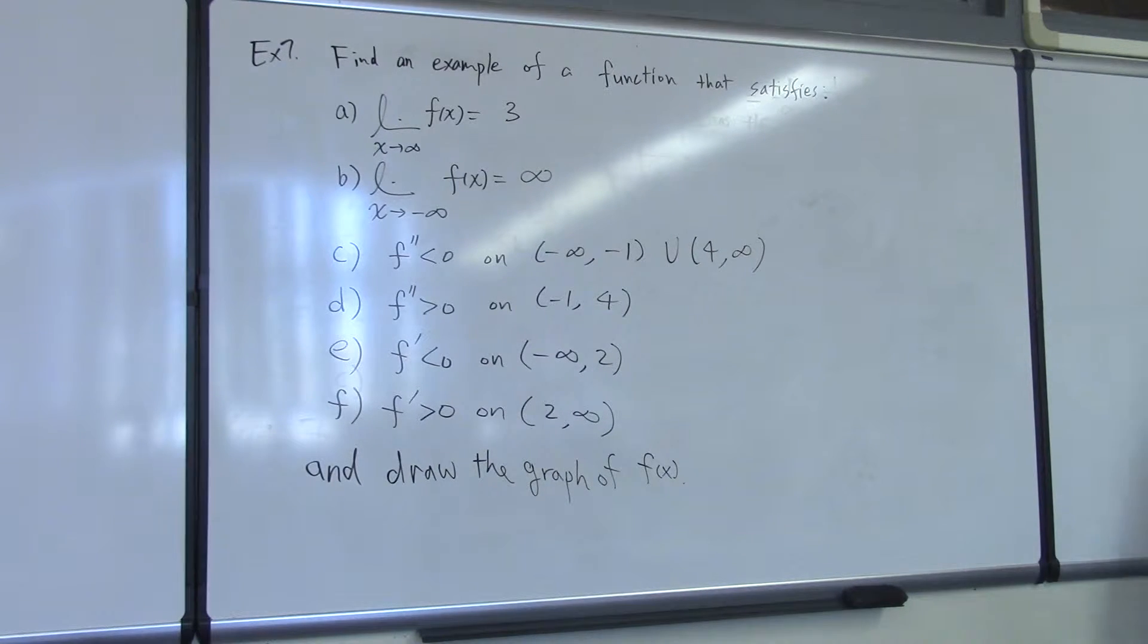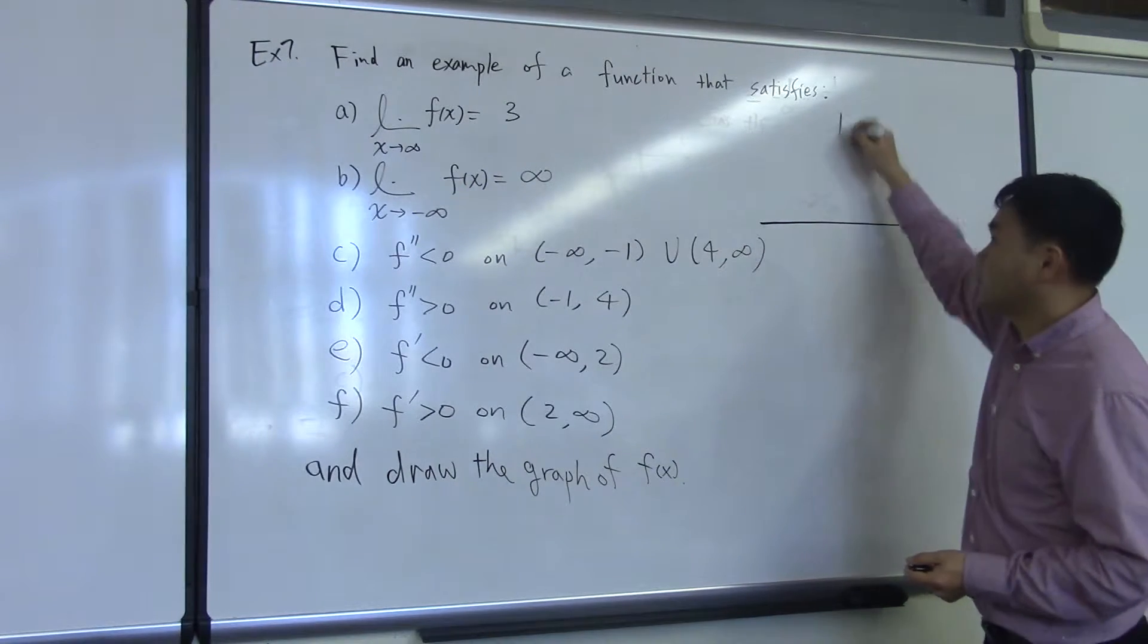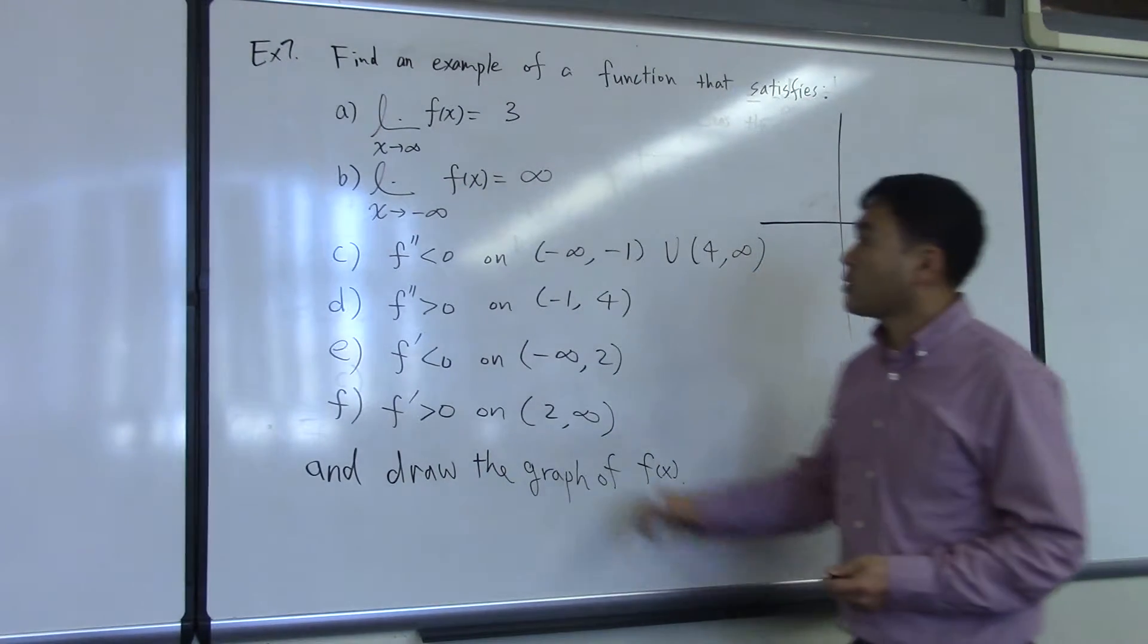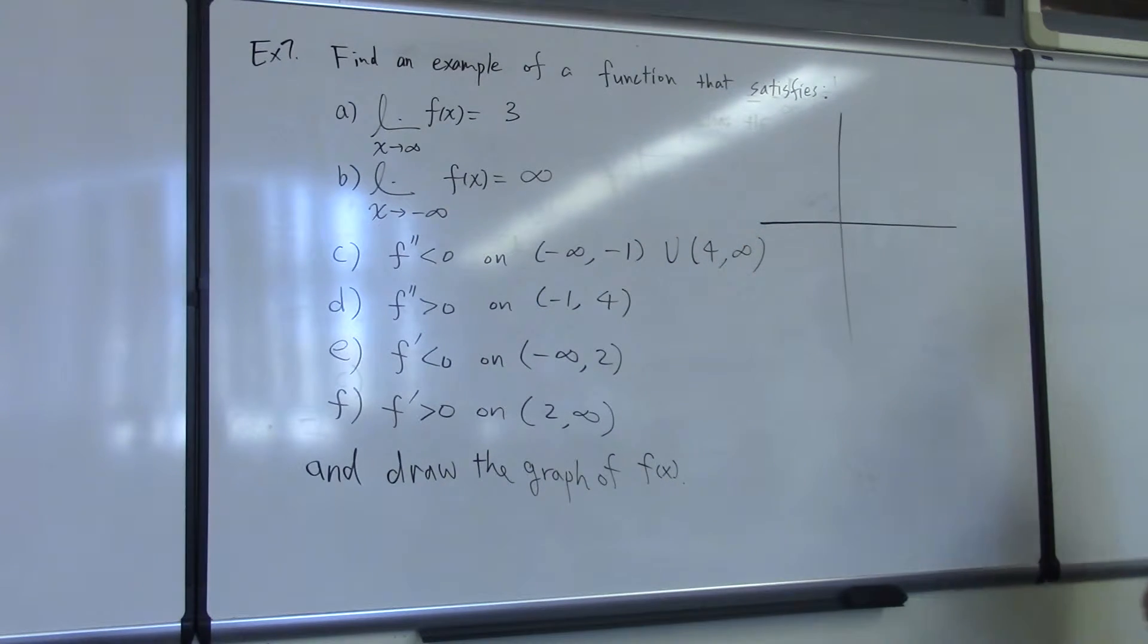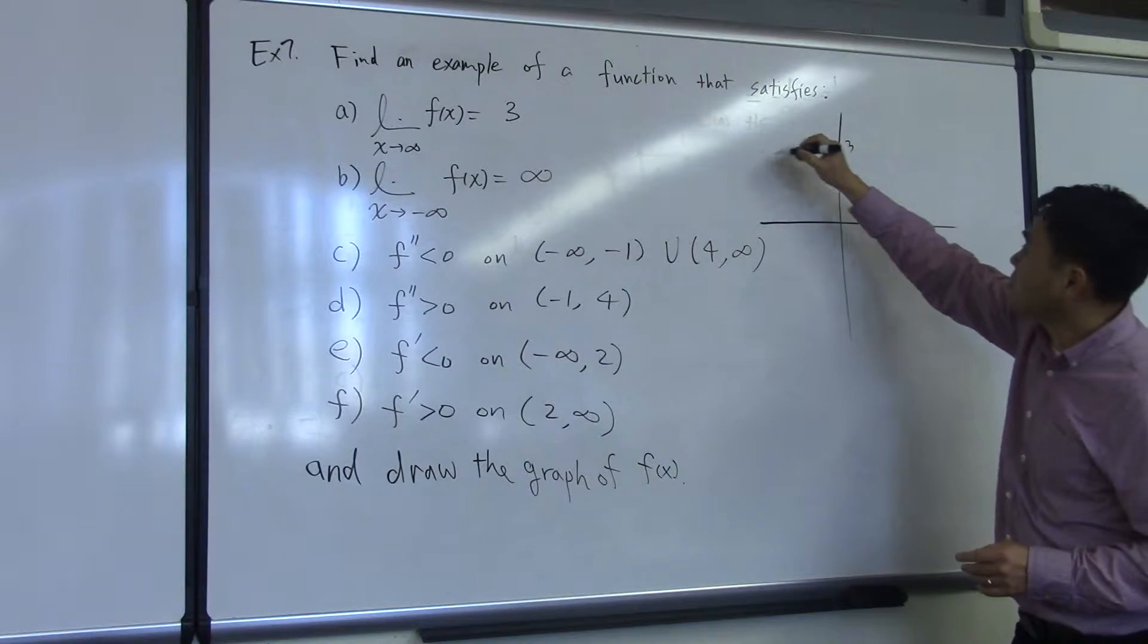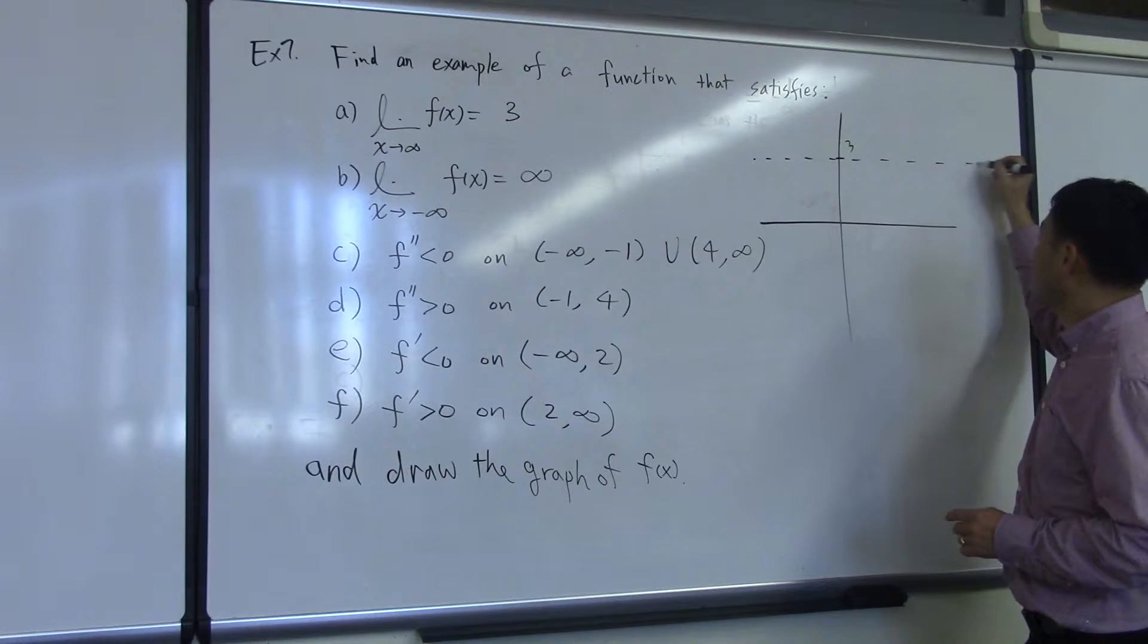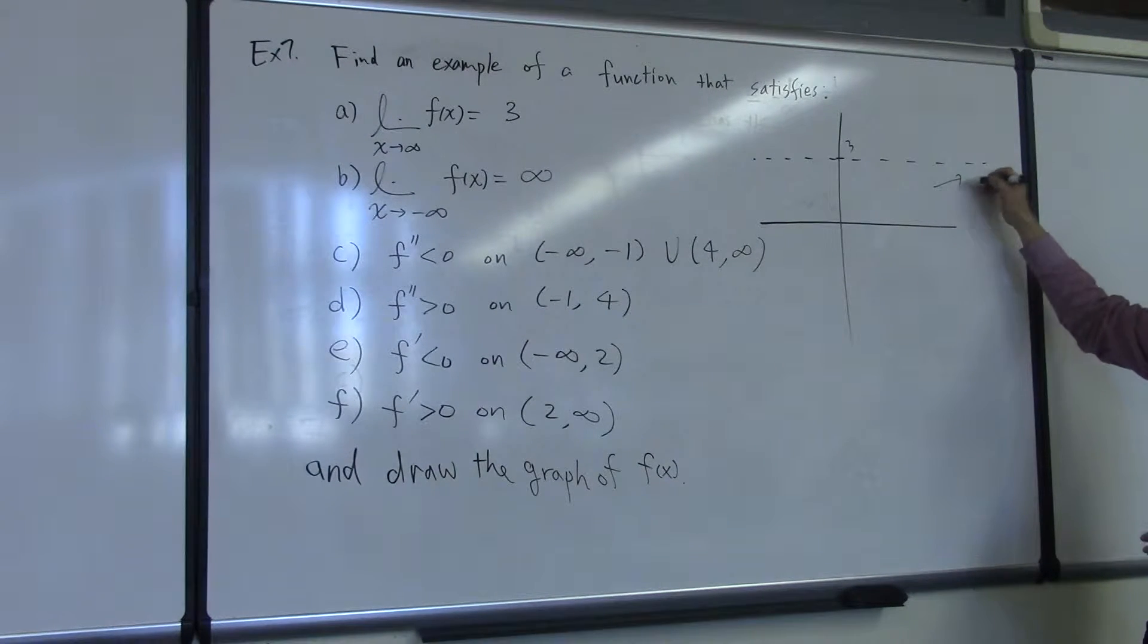So let's think about what each condition means. As x goes to infinity, the limit is 3. What does that mean? There's a 3 and there's a horizontal asymptote, and the graph is getting closer and closer to 3. So it's either going that way or that way.